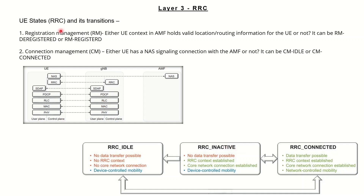In inactive mode, registration has been done and it is RM registered mode, where the AMF has all the details related to the location of the user. NAS signaling is also established between the UE and the core network. However, in this case, no data is being transmitted.